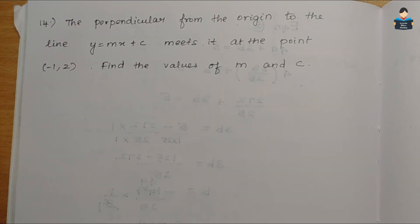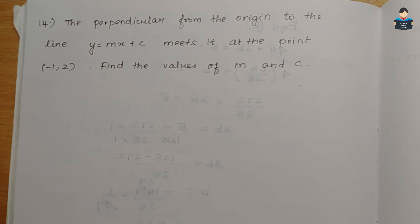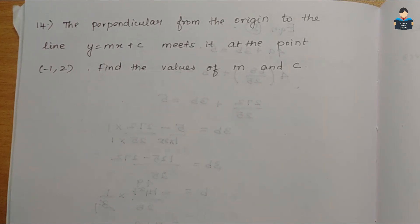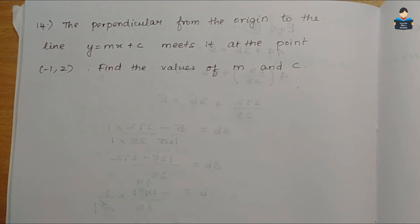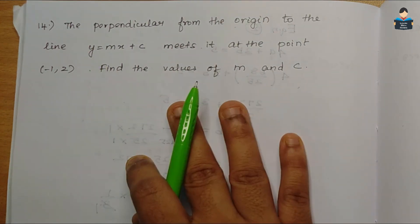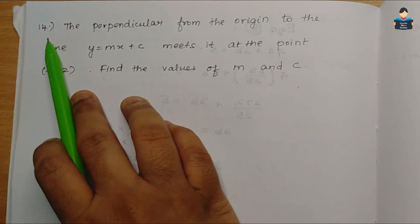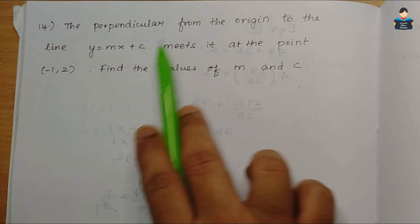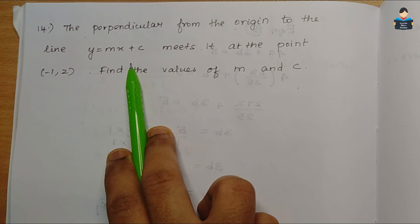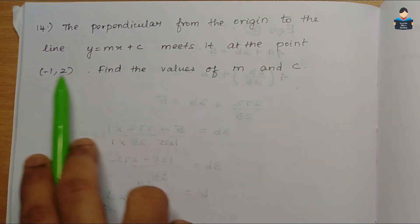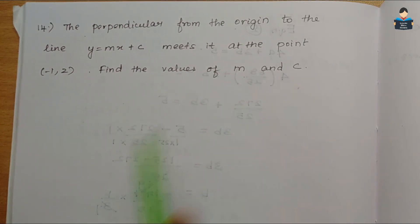Hello everyone, welcome to our channel. In this video, Class 11 Straight Lines Exercise 10.3 — that is the new edition book Exercise 9.3 — Question number 14. The question: the perpendicular from the origin to the line y = mx + c meets it at the point (-1, 2). Find the values of m and c.